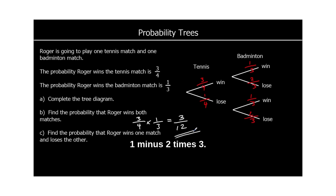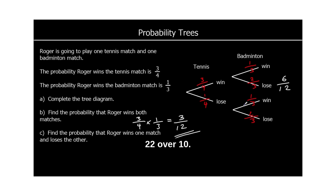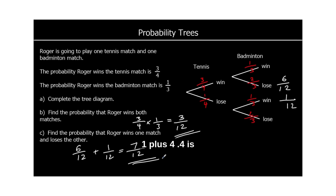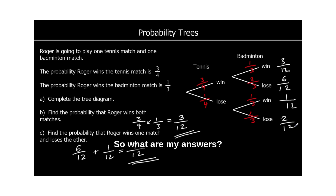Find the probability that Roger wins one match and loses the other. So it's either win-lose: three quarters times two thirds is six twelfths; or lose-win: one quarter times one third is one twelfth. So we've got six twelfths plus one twelfth, which is seven twelfths. And if we worked out all the probabilities, they add up to one whole: three plus six is nine, plus one is ten, plus two is twelve — everything adds up to twelve out of twelve, one whole.